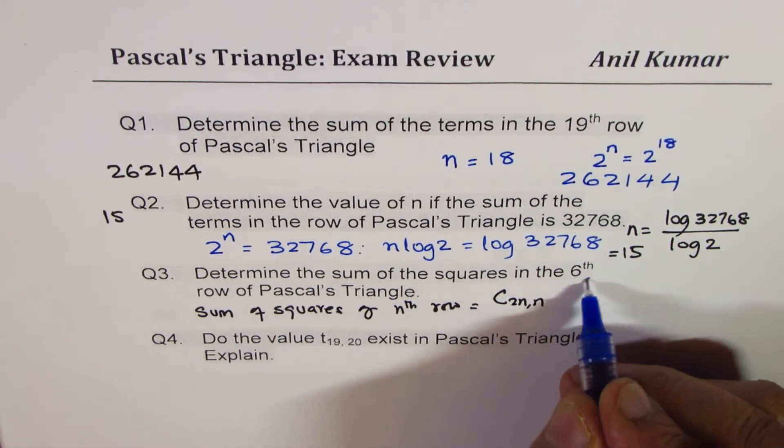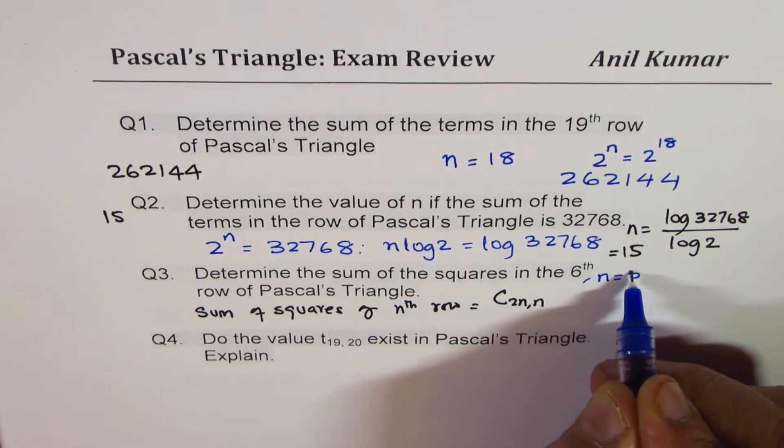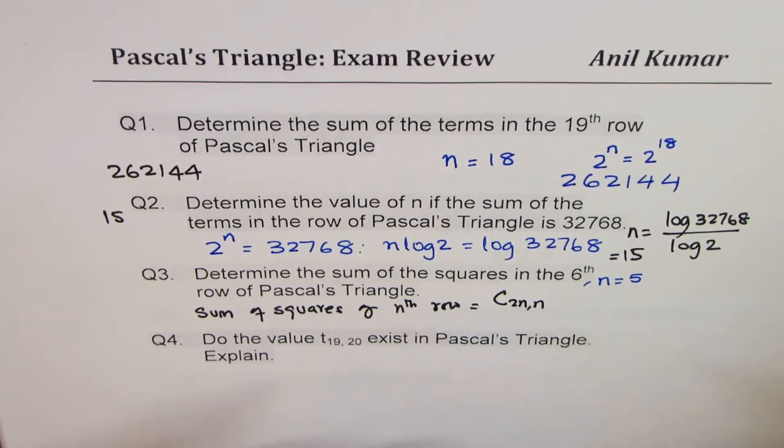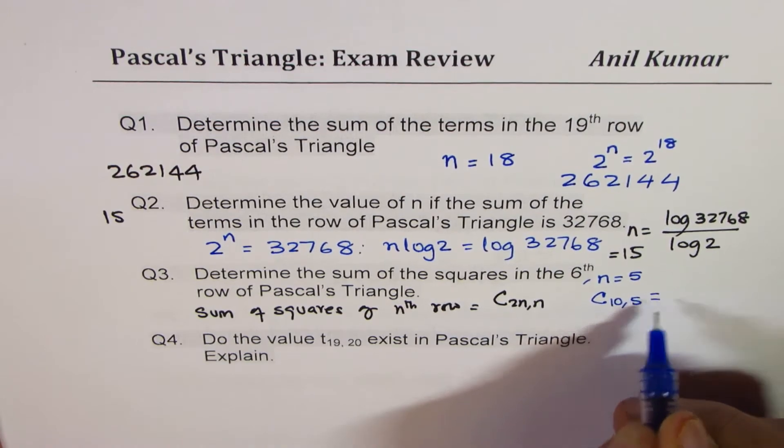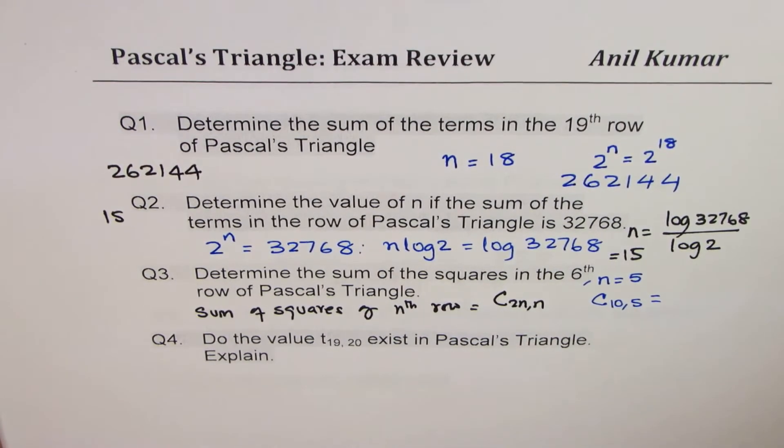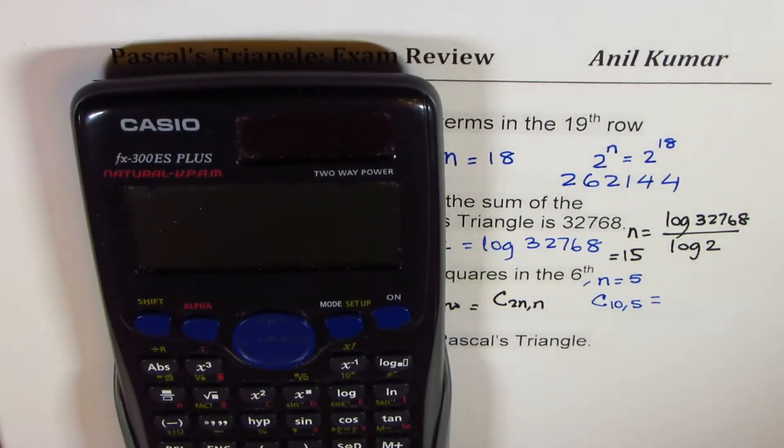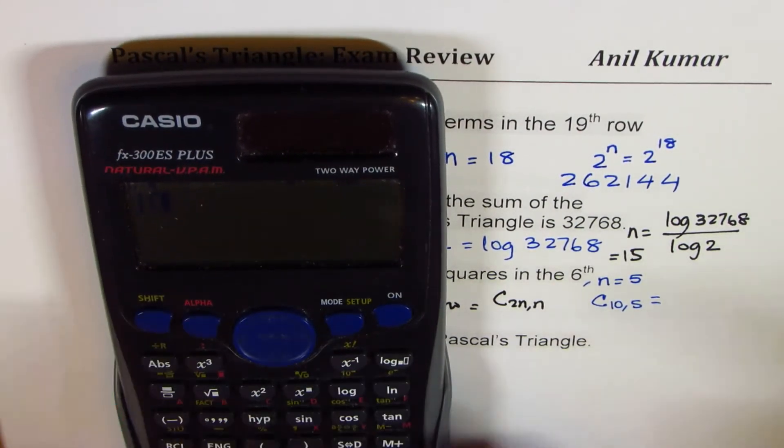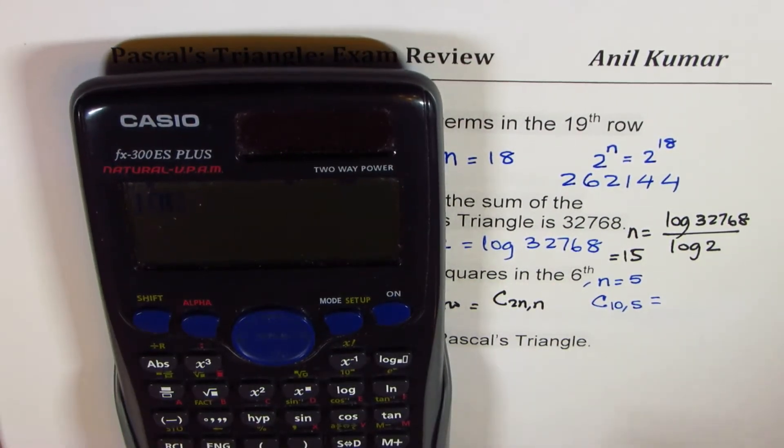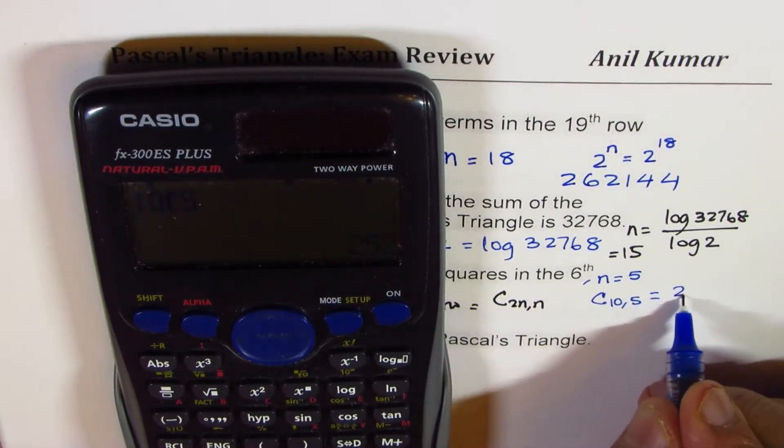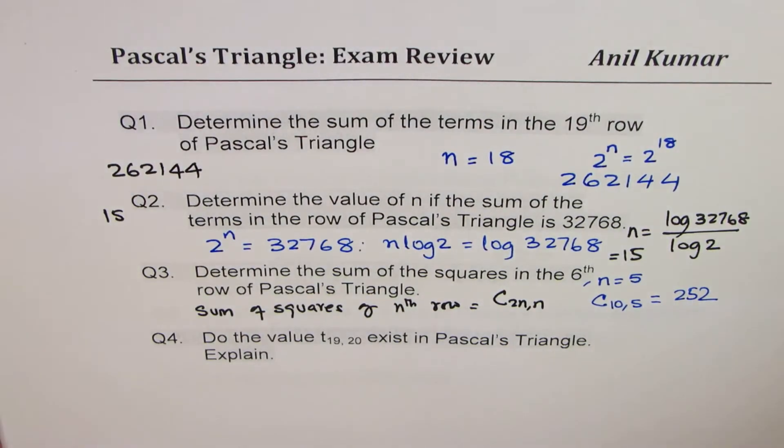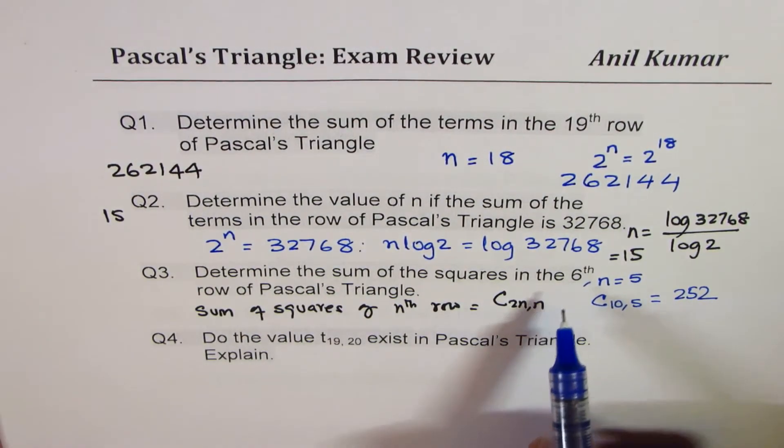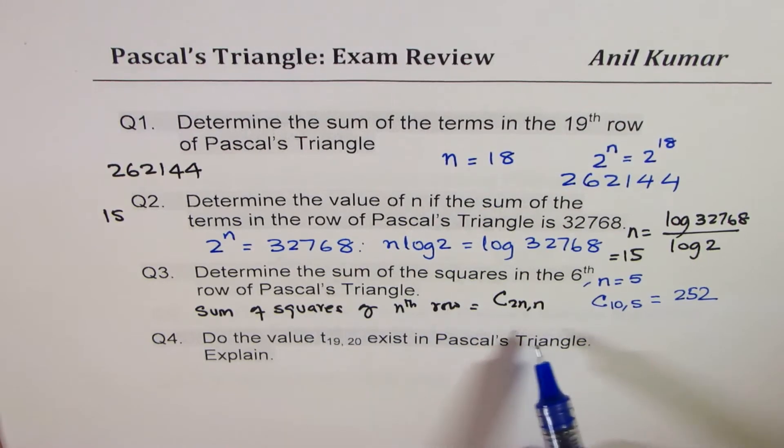So in that case, n is equals to 5. And therefore, this answer should be c105. That becomes the answer. You can again use the calculator and find this answer. So 10 combination 5 equals to 252. So the answer for you is 252. Or another option is that you can build the Pascal's Triangle and add these squares.